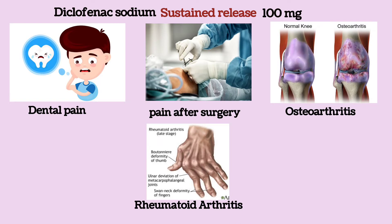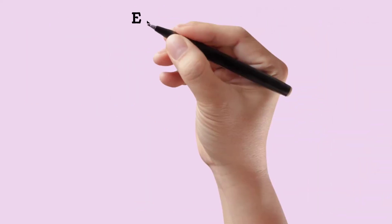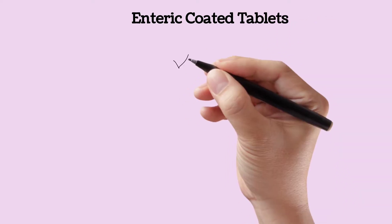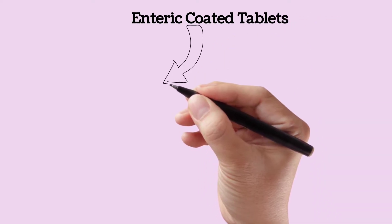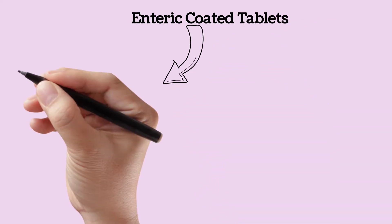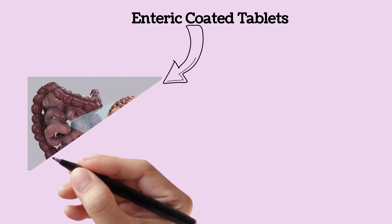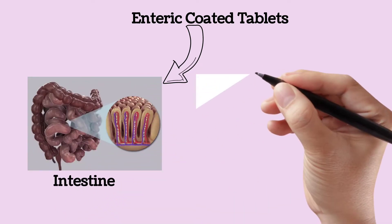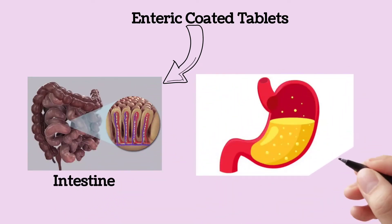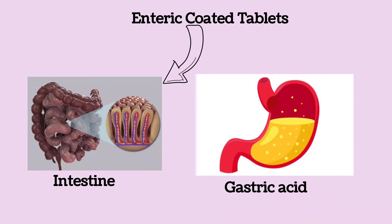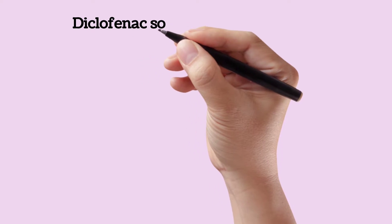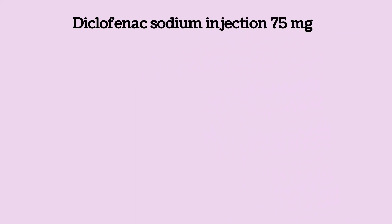In clinical practice you will also see enteric coated tablets. These are coated with a material that delays the release of medication until it reaches the intestine. Enteric coating prevents the destruction of the drug by gastric acid.